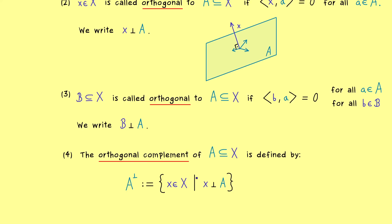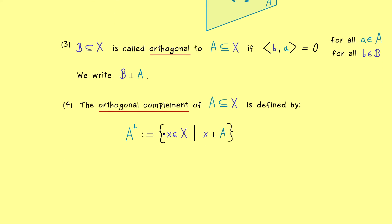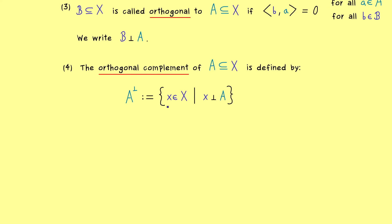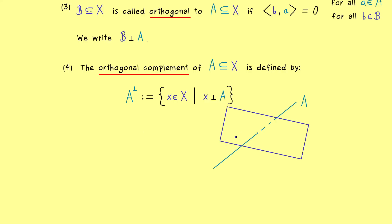We can give a nice visualization: we put all the orthogonal vectors into one set. For example, if A is just given by a one-dimensional line, then the orthogonal complement is a whole subspace orthogonal to A. You can immediately recall that the orthogonal complement could be an infinite-dimensional subspace, and moreover it is always a subspace and not just a subset.